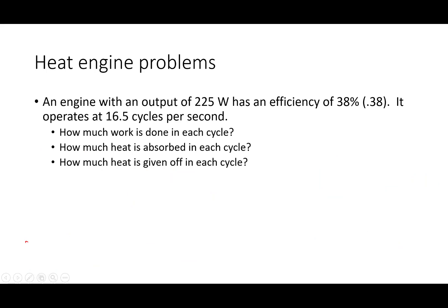This is actually problem three. An engine with an output of 225 watts has an efficiency of 38%. It operates at 16.5 cycles per second. How much work is done in each cycle? How much heat is absorbed in each cycle? And how much heat is given off in each cycle? So we can draw our heat engine diagram in terms of works and energies or in terms of powers. Since all three of our questions are about individual cycles, works and energies, I'm going to sketch it out in terms of works and energies. Q in, Q out, and work.